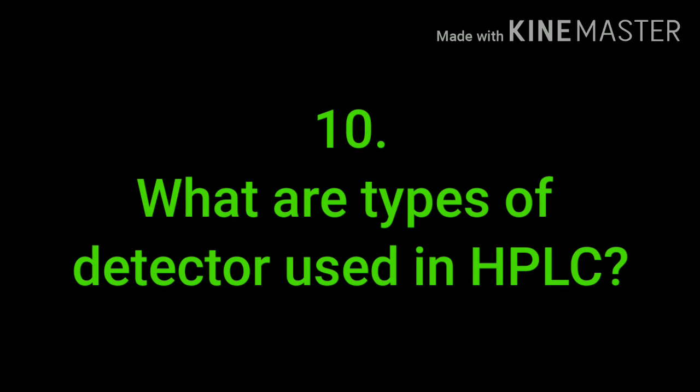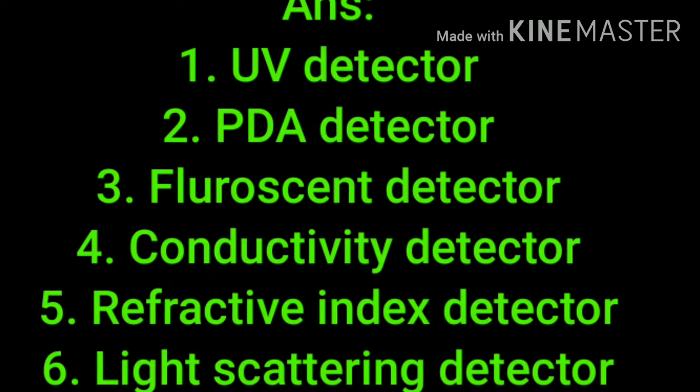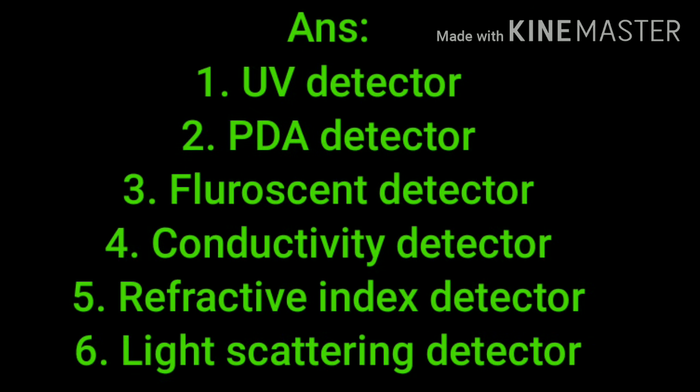What are types of detectors used in HPLC chromatography? UV detector, PDA detector, fluorescence detector, conductivity detector, refractive index detector, and light scattering detector. These are six different types of detectors used.